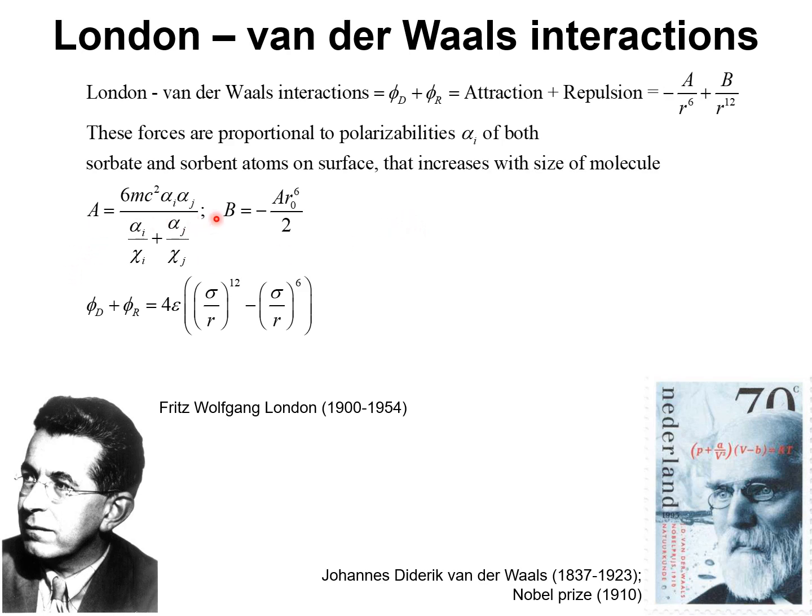The expressions for A and B are provided here where c is the speed of light, alpha is the magnetic susceptibility. It is very common to write the London Van der Waals interaction in terms of Lennard-Jones 6-12 potential.